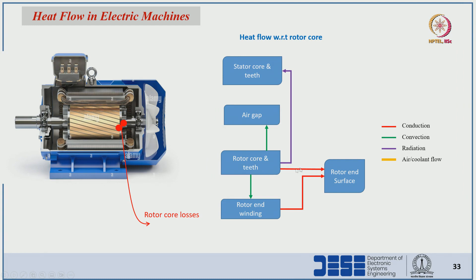Rotor core and teeth transfer heat to the stator core and teeth through radiation, since there is no direct connection across the air gap. Heat from rotor core to rotor end winding is by convection. However, if the rotor end winding temperature is higher than the rotor core temperature, heat will not transfer from core to end winding — this follows the second law of thermodynamics.